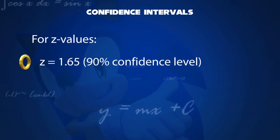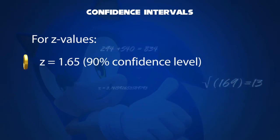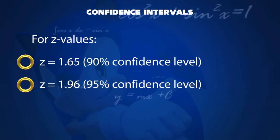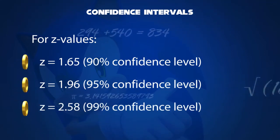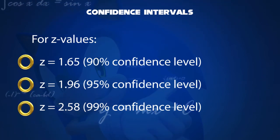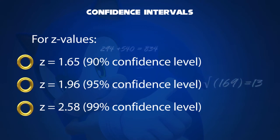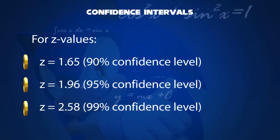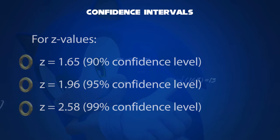Note the following z values: At 90% confidence level, the z value is 1.65. At 95% confidence level, the z value is 1.96. And finally, at 99% confidence level, the z value is 2.58. You may have noticed that the z value increases sharply as we move from 95% to 99% confidence level.